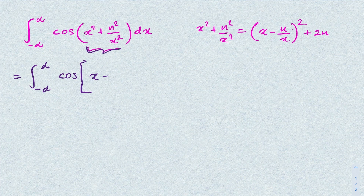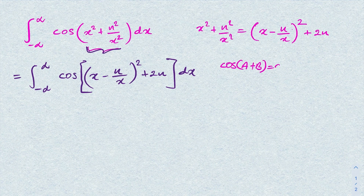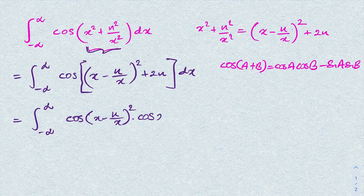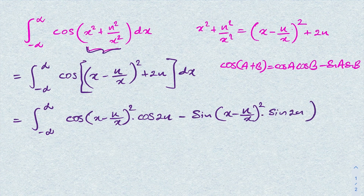We apply the cosine addition formula: cos(a + b) = cos(a)cos(b) − sin(a)sin(b). So the integral becomes the integral from minus infinity to infinity of [cosine of (x − n/x)² times cosine(2n) minus sine of (x − n/x)² times sine(2n)] dx. We can then split this into two separate integrals.